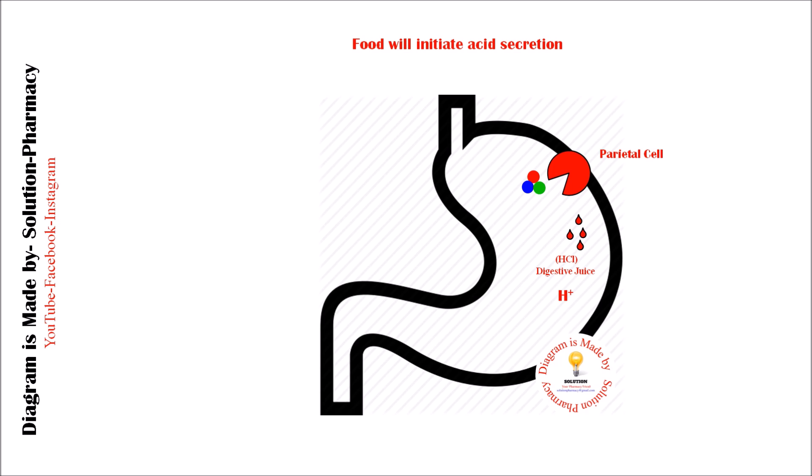When this excess amount of acid is present in our stomach, our target is to neutralize it. Antacids such as aluminium hydroxide, magnesium hydroxide, calcium carbonate, sodium bicarbonate, and many others are used for this purpose. These are some common examples of antacids.